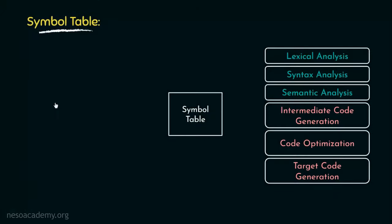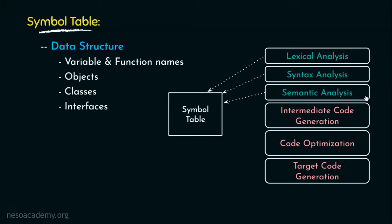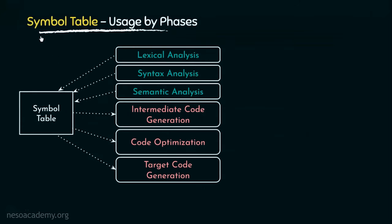The symbol table is basically a data structure which is created and maintained by compilers in order to store information about the occurrences of various entities such as variable and function names, objects, classes, interfaces, etc. The information inside the symbol table is gathered from the analysis phase, which in turn is used by the synthesis phase in order to generate the target code. Now let's observe how the symbol table is used by the various phases.